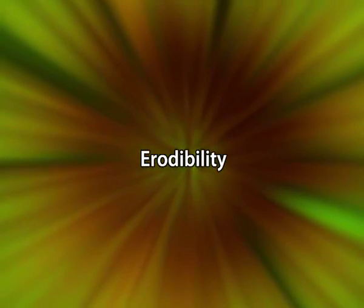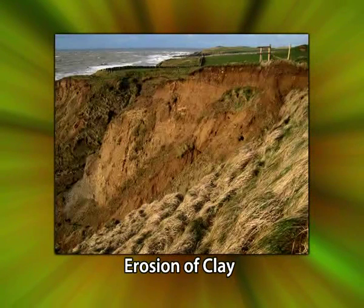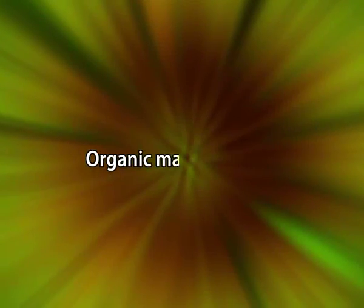Soil texture also influences soil structure. Generally, sandy soils are structureless while in other textures particles aggregate to form varied structures. Soil texture also influences erodibility — that is, susceptibility to erosion. A soil with a high proportion of clay and silt has more erodibility than sandy soil under similar environmental conditions. Soil texture also influences the level of organic matter; sandy soils show faster decomposition of organic matter than clay soils because of greater oxygen availability in light-textured sandy soils.